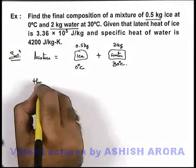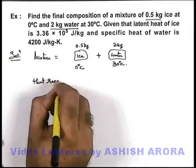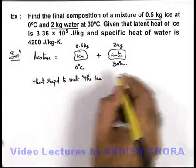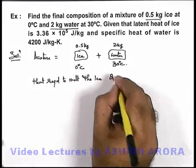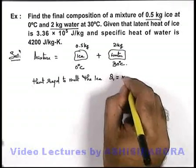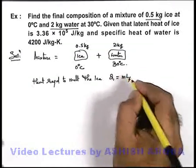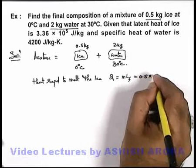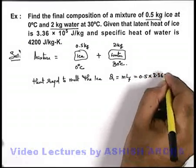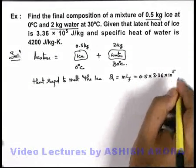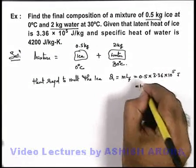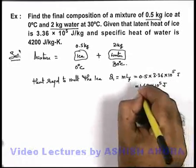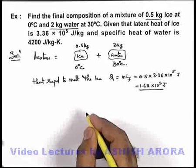Let's first analyze heat required to melt the ice. If we calculate it as Q1, this will be mLf, where Lf is the latent heat of fusion. So for ice we can write 0.5 × 3.36 × 10^5 joules. So this will be 1.68 × 10^5 joules. This is the total amount of heat required to melt the ice.